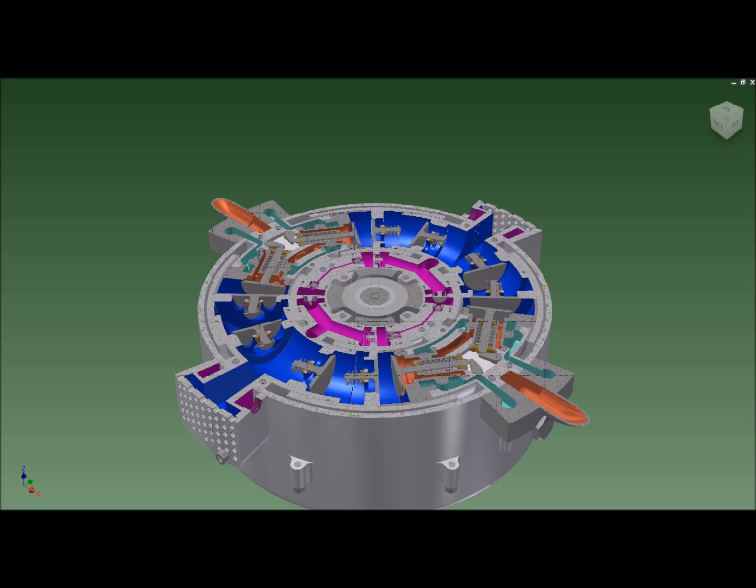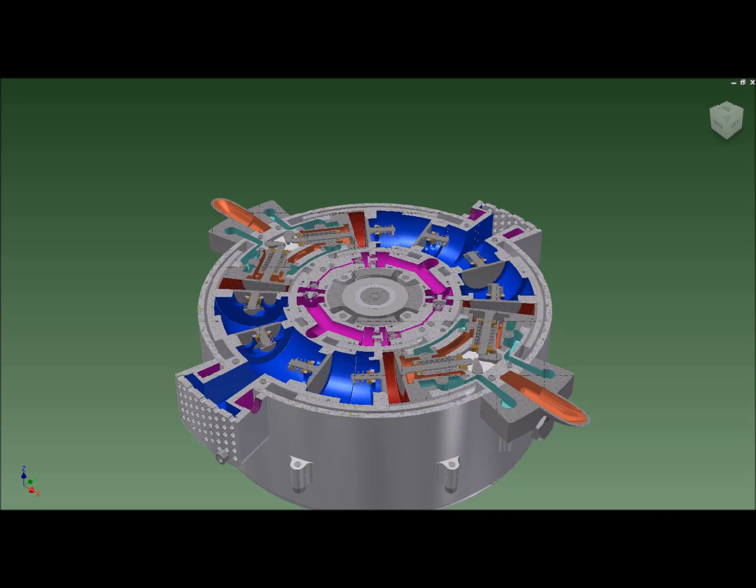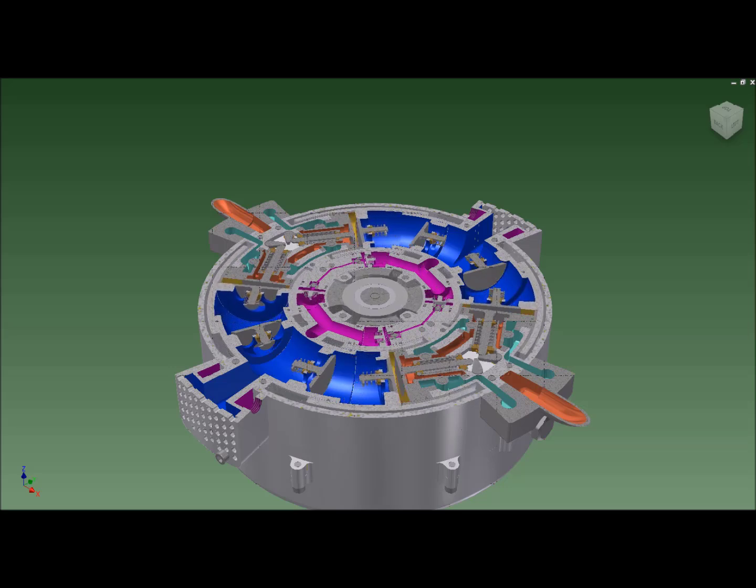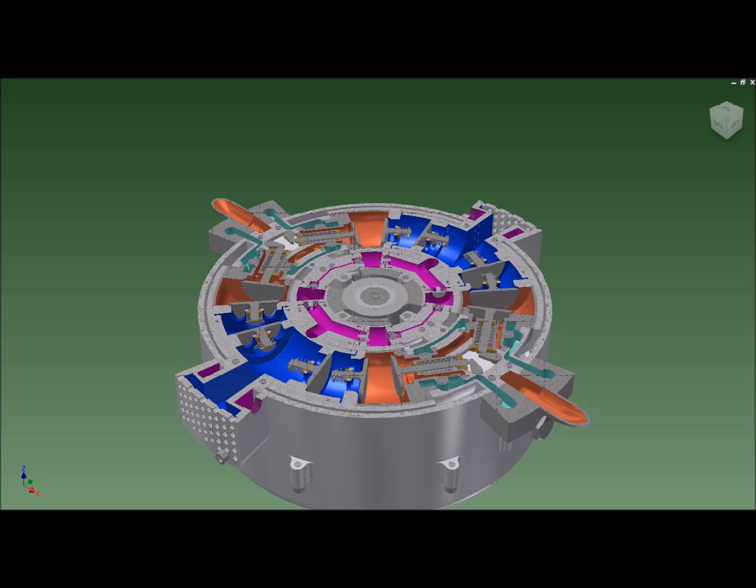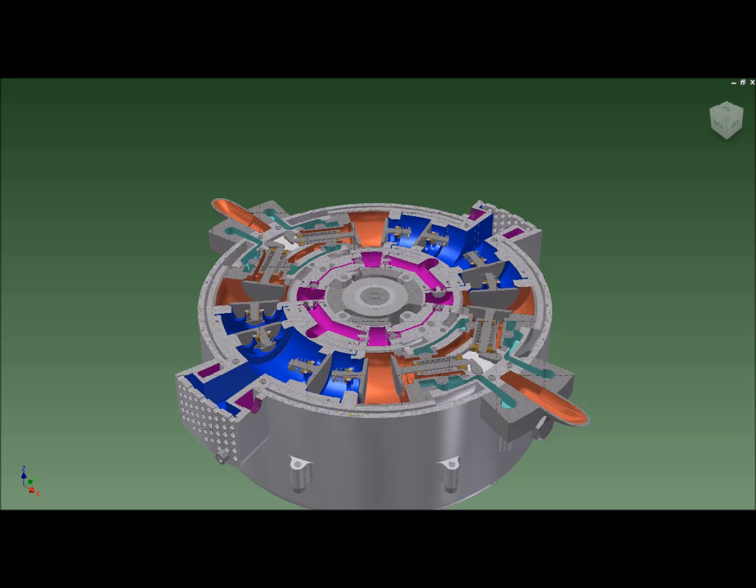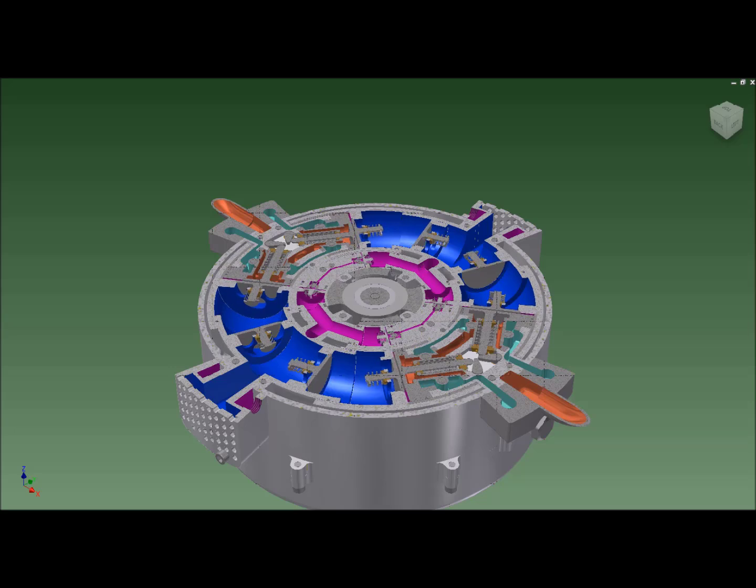In this sequence, the exhaust valves are held open long enough to drop the compression ratio to approximately 8. With significantly less of the charge of air retained for compression, the exhaust valves can be held open for the majority of the upstroke, resulting in a significantly reduced compression ratio if an easy spin start is desired.